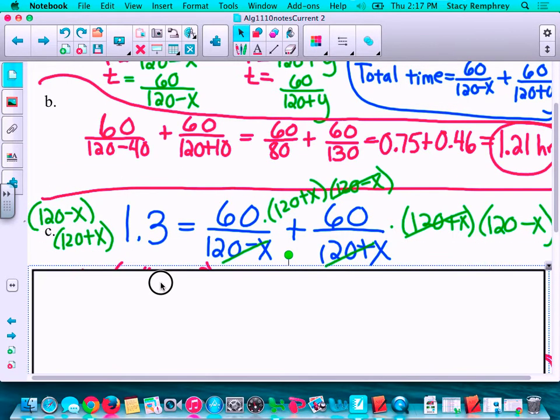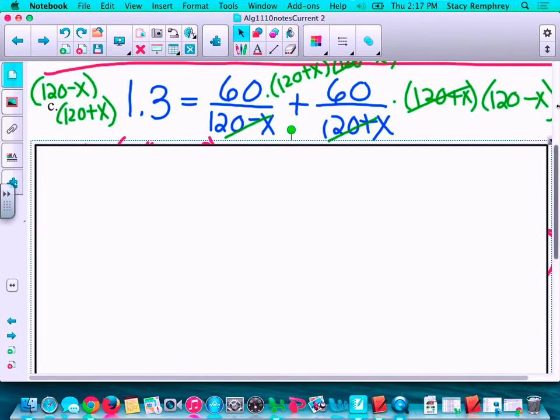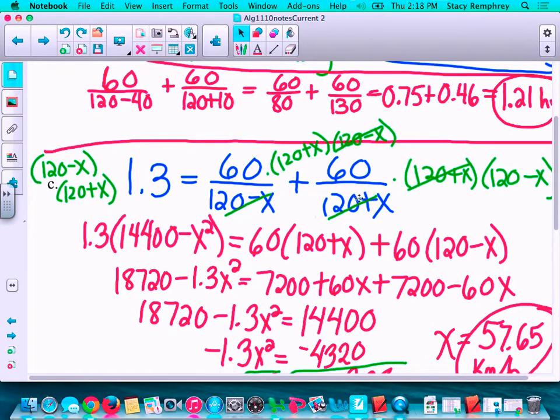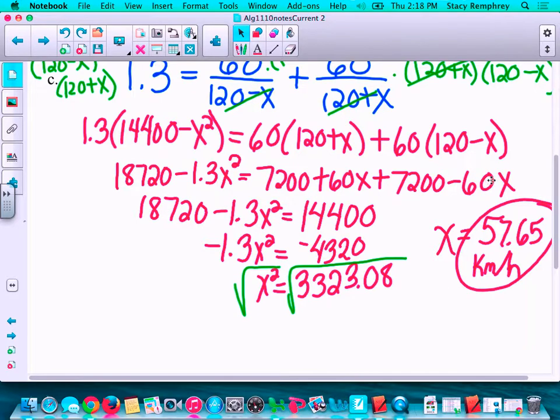In part C, they gave me a total time. So in the blue, let's just delete this whole thing. In the blue is my original equation. Here's my total time is equal to my time out plus my time back. I multiplied everything, that's the green that you see, by the least common multiple of the denominators. Over here, I multiplied the two binomials. Things canceled. Here's what I have left. Things canceled. Here's what I have left. In this step, I distributed. In this step, I combined my like terms. Over here, I subtracted 18,720 from both sides. In red, I divided both sides by negative 1.3. I square rooted both sides. And 57.65 kilometers per hour is your answer.